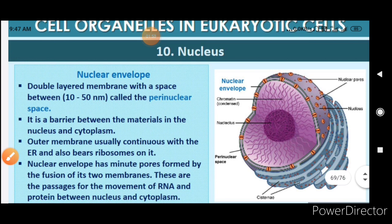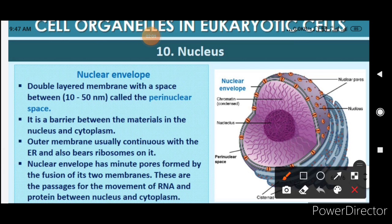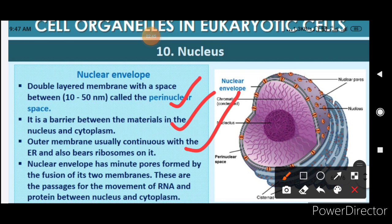The nuclear envelope is a double-layered membrane with a space of 10 to 15 nanometers between the layers, called the perinuclear space. It acts as a barrier between materials in the nucleus and the cytoplasm. The outer membrane is usually continuous with the endoplasmic reticulum and bears ribosomes on it, because the nucleus and ER need to be close to each other for efficient protein synthesis signaling.